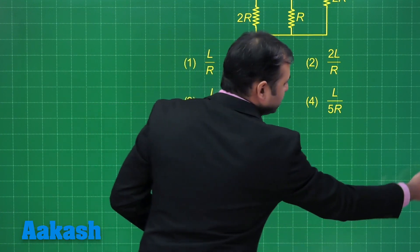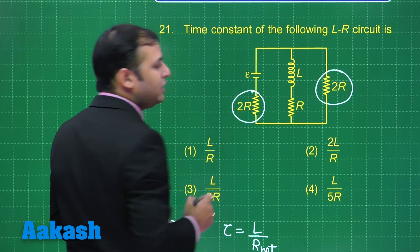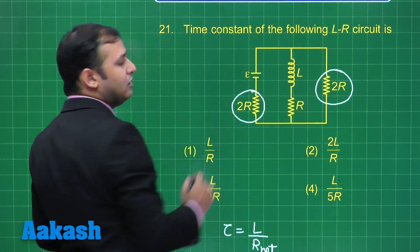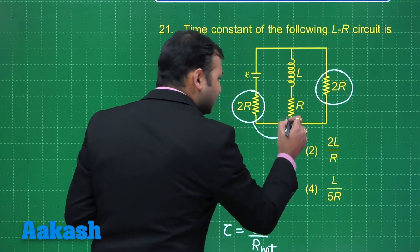Now, across the circuit if you see this resistance and this resistance appears to be in parallel. So, 2R and 2R will be in parallel that means it becomes R and that R will be in series with this R.